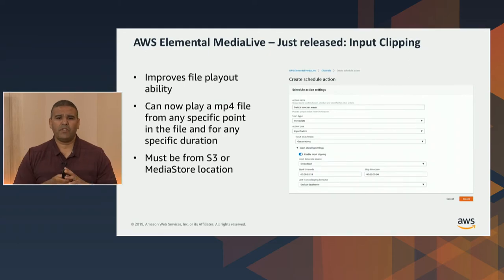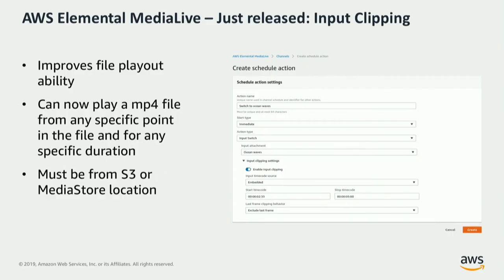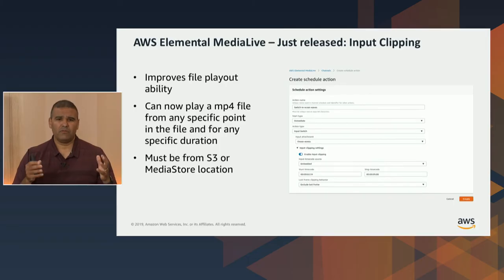The next playout feature is input clipping. Input clipping allows you to play a file from any point in that file's location. In the past with MediaLive, you could only start from the beginning, but we've relaxed that constraint. By specifying an in time and an out time, you now have the ability to play the file from position zero, 10 minutes in, 15 minutes in, all the way to the end, or for a specific point in time. The only caveat is that input clipping must be from an S3 or MediaStore source for this particular release.